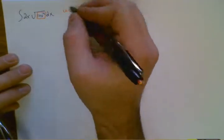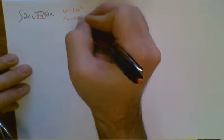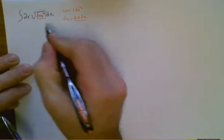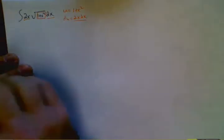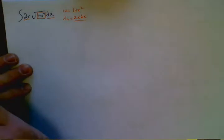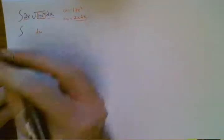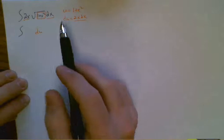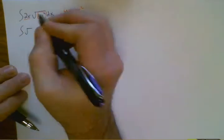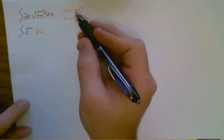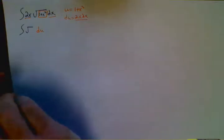So if u is 1 plus x squared, du is 2x dx. How convenient. 2x dx is right here. So that's a perfect substitution. I don't have to divide by anything or do anything differently. That 2x dx turns directly into a du. So I literally, at the moment, have my du.